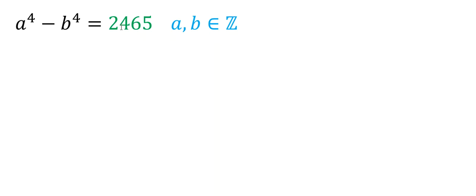a to the 4 minus b to the 4 equals 2465, where a and b are integers. Because the power is only 4, we can say without loss of generality we consider that a and b are greater than or equal to 0, because for example if a was 2, we can consider negative or positive 2 at the end.